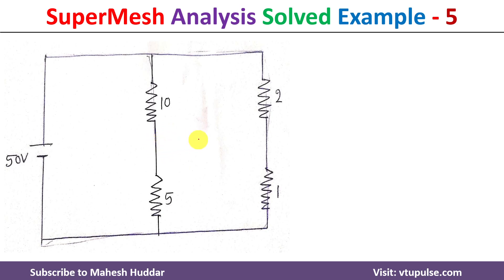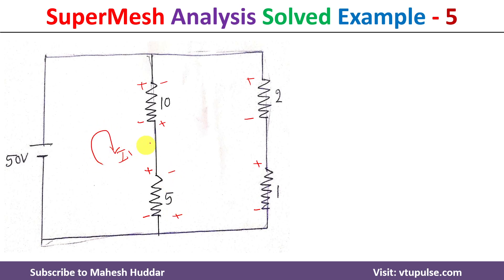What I did is just remove that one branch. Now, as we already assigned the current for each branch, this remains the same. For I1, and for the 10-ohm and 2-ohm resistances this is I2, and for the 5-ohm and 1-ohm resistances this is I3.